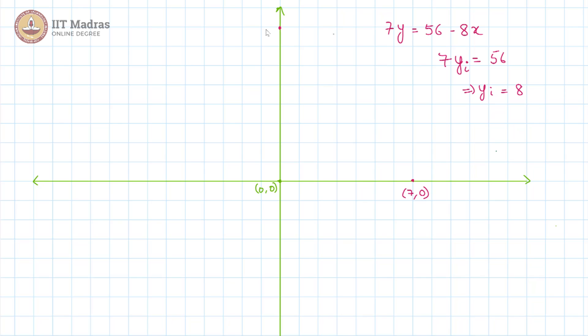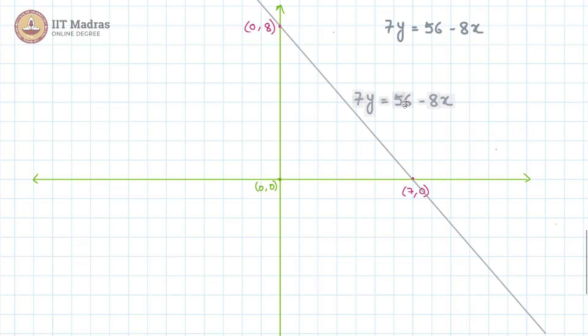So, this point here, which is 0 comma 8, this is our y intercept. So, this is a straight line we have been given. 7y is equal to 56 minus 8x. It passes through 7 comma 0 and 0 comma 8.